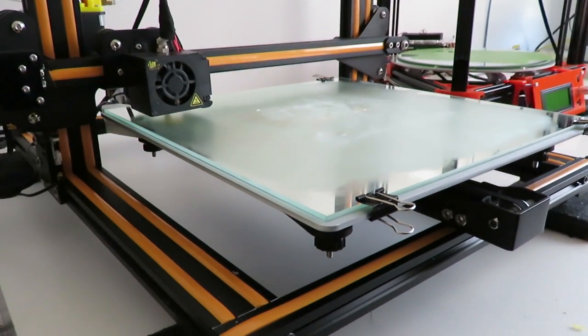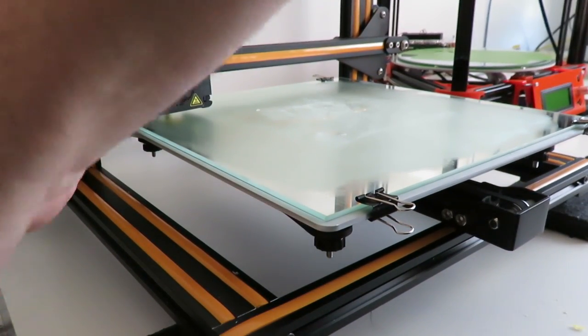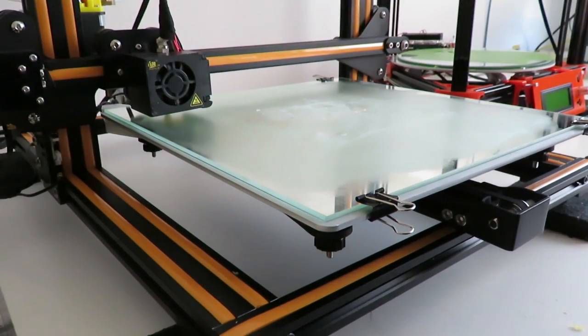So the first thing we need to do is level our bed on a clean glass. Mine was already covered in glue so I'll just demonstrate. This is pretty simple.